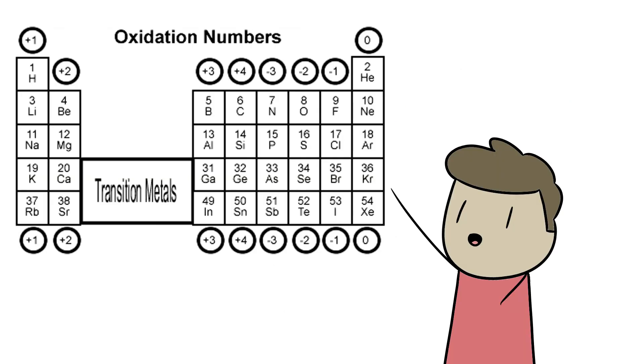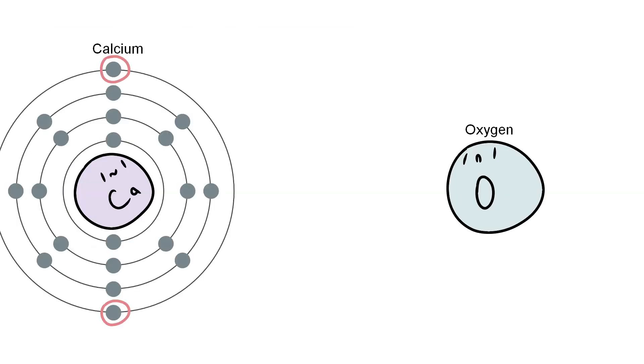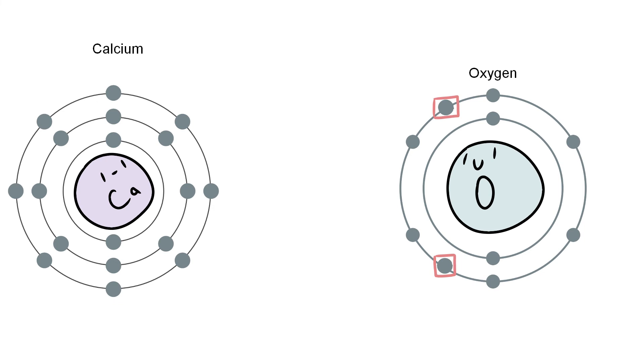Let's look at another example. We can use this chart to help us bond atoms together. Calcium has two while oxygen needs two. So as we saw before, calcium gives up two to oxygen.